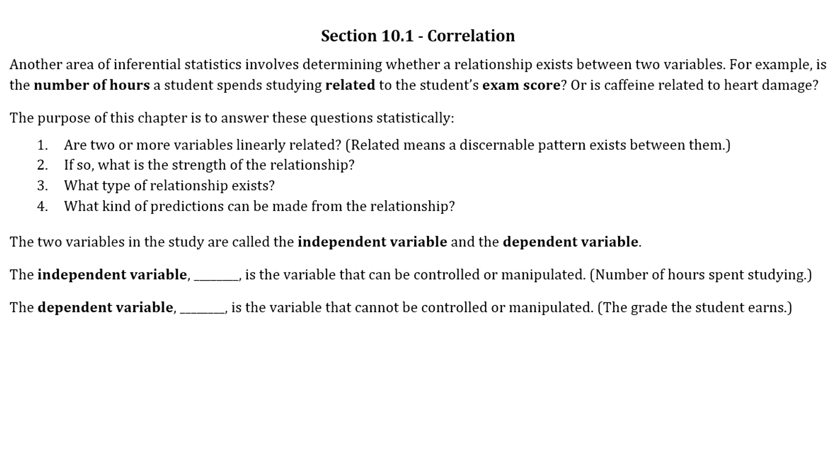Chapter 10 starts with a section called correlation, an area of inferential statistics that involves determining whether a relationship exists between two variables. For example, is the number of hours a student spends studying related to the student's exam score, or in medical contexts, is caffeine related to heart damage?